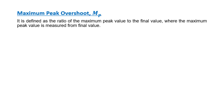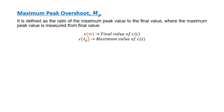Maximum overshoot or peak overshoot — symbol Mp — is the ratio of the peak value to the final value, where the peak value is measured from the final value. The final value symbol is C(∞). The peak or maximum value occurs at time T equal to Tp, that is peak time, so the value is C(Tp). The formula for peak overshoot is: [C(Tp) − C(∞)] / C(∞).